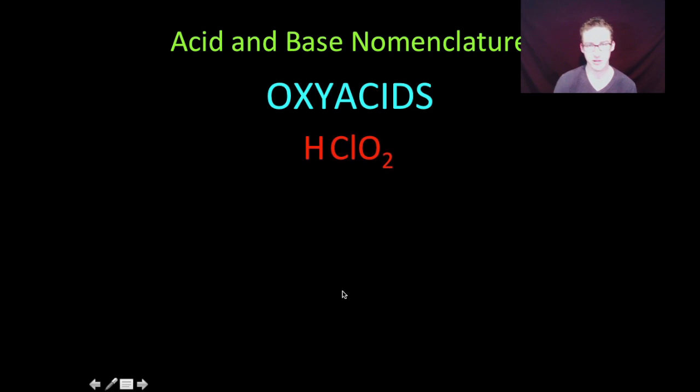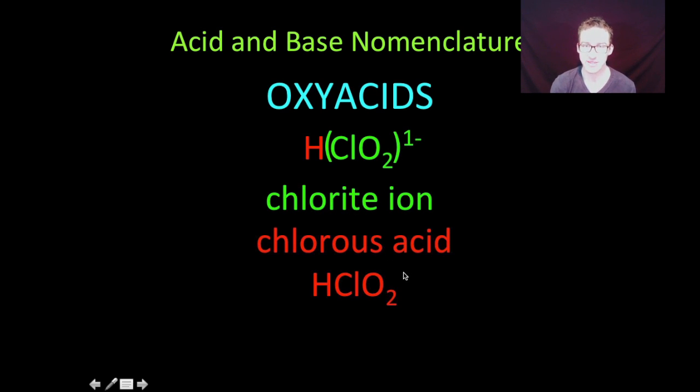Again, let's do HClO2. Identify that this is an acid because we're starting with that H. Not binary, we've got a polyatomic involved here. This one is the chlorite ion. Again, remember adichitis, the ites become ous. So HClO2 is simply chlorous acid.